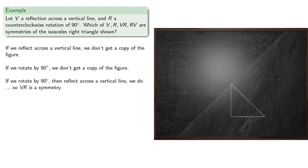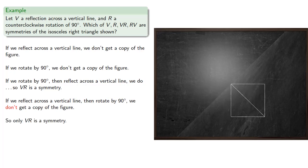If we reflect across a vertical line then rotate by 90 degrees, we don't get a copy of the figure. And so only VR is a symmetry.